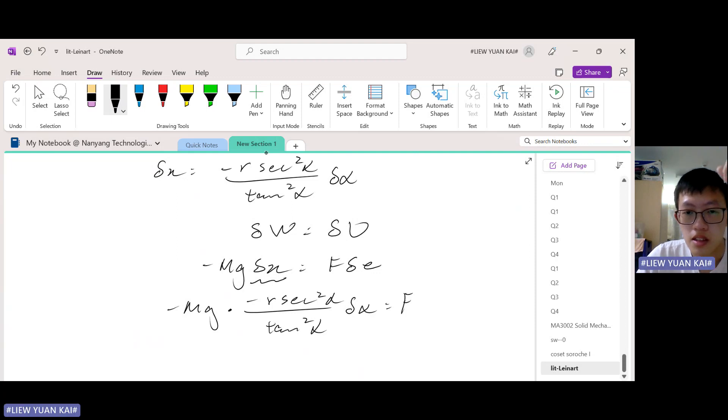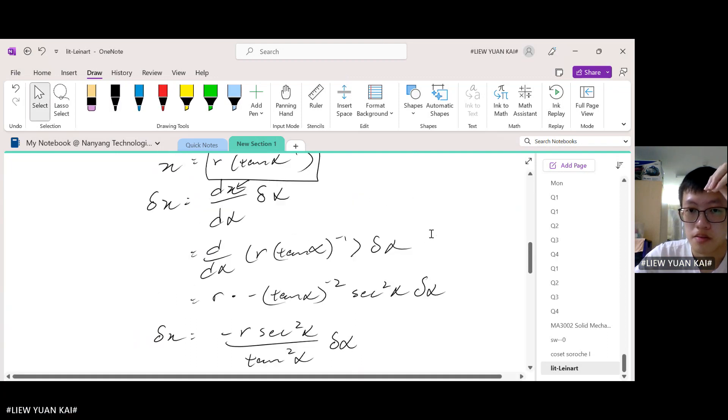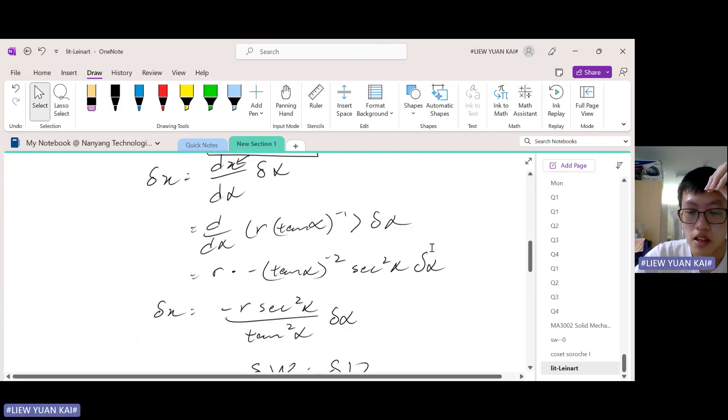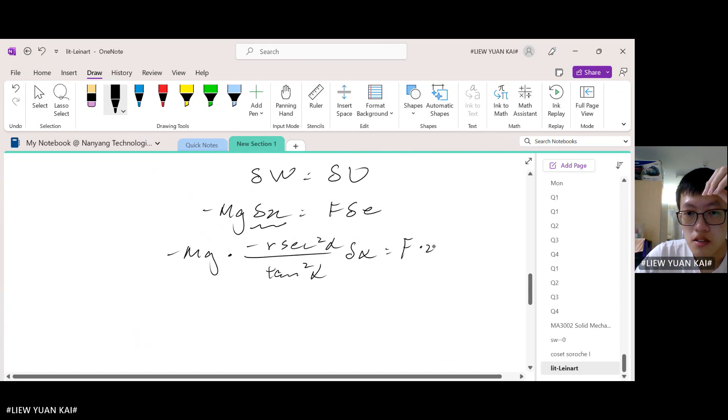So now we replace δx with this, and we replace δE with this. So 2L cos 2α, 2L cos 2α δα. We, both sides have δα, we can drop the infinitesimal.